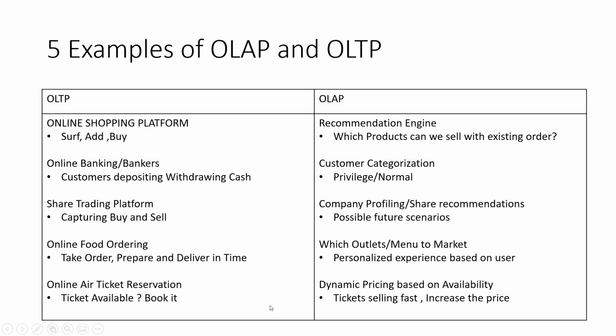Finally, a ticket booking OLTP system serves the simple purpose of checking if seats are available and booking them. An OLAP system, on the other hand, identifies the rates at which tickets should be provided based on historical patterns. If seat availability is lower than usual, it will suggest a price hike to maximize profits. So you see, the purposes these two systems serve are entirely different.